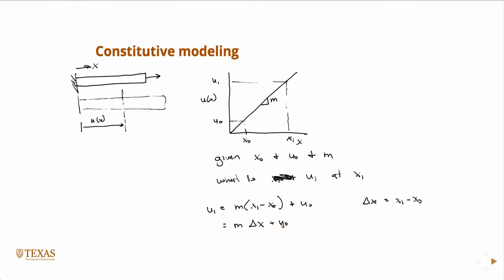And u0 is a function of x1, of course. And u1, another way to write u1 would be: u1 is evaluated at x1, but x1 is x0 plus delta x, right?